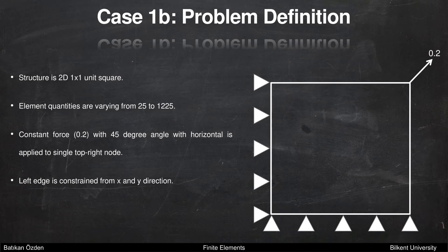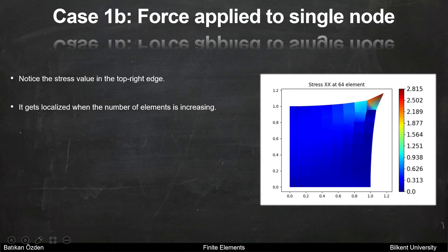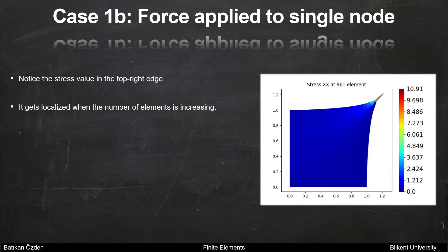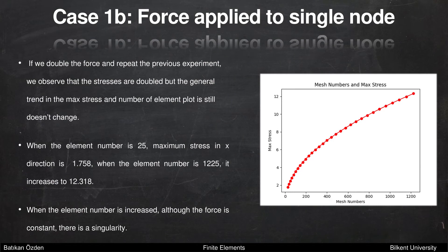For case 1b, we repeat the same experiment, but this time a constant force of 0.2 is applied and the left edge is constrained from x and y directions. Notice the stress value in the top right node — it gets localized as the number of elements increases. Compared to the previous case, if we double the force, the stresses are doubled, but the general trend in maximum stress versus number of elements still doesn't change. When the element number is 25, maximum stress in x direction is 1.7. When the element number is 1225, it increases to 12.3.